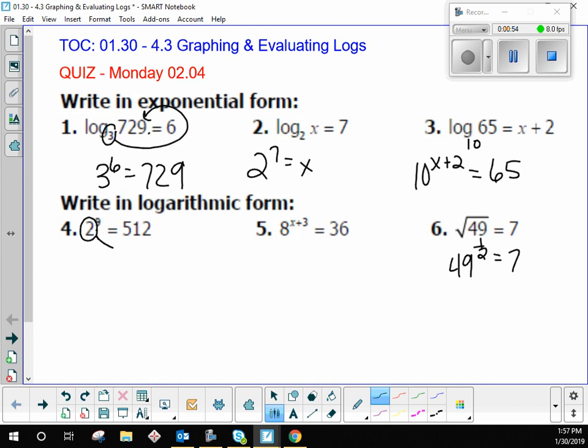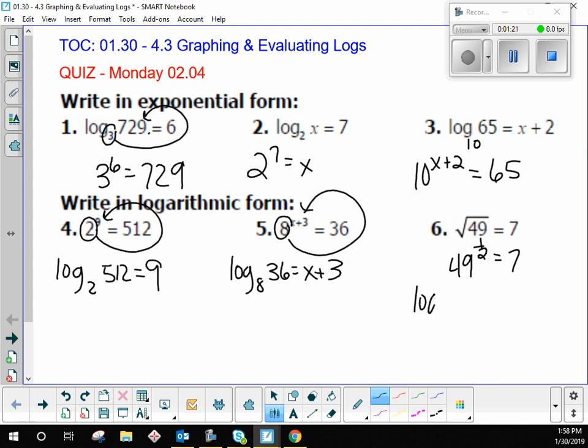So you start with the base, you go around. It's log base 2 of 512 equals 9. Did you get that? And then for 5, you start at the base, you go around. Log base 8 of 36 equals x plus 3. Okay, we're not actually solving, but if you wanted to, you would just subtract 3 and you'd have log base 8 of 36 minus 3 equals x. And then here, log base 49 of 7 equals 1. How about all those correct? All right, very good.